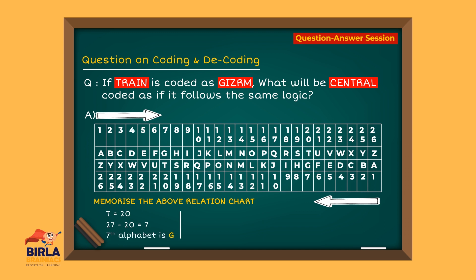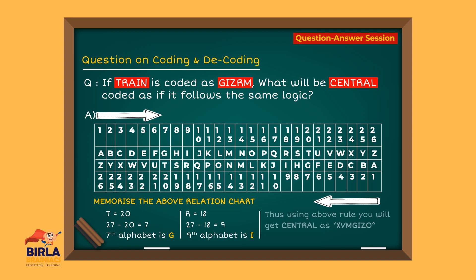Similarly, R is the 18th alphabet. 27 minus 18 is 9, and the 9th alphabet is I. Thus, using the above rule, you will get 'central' coded as X, V, M, G, I, Z, O.